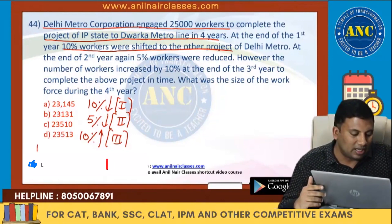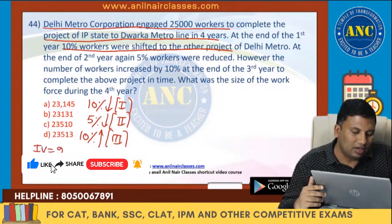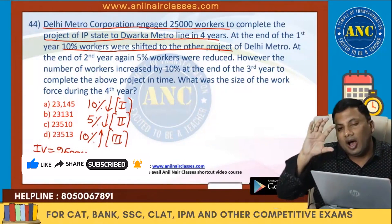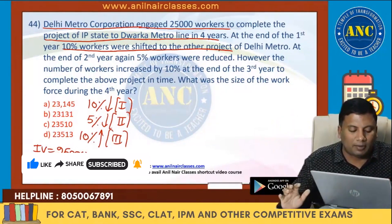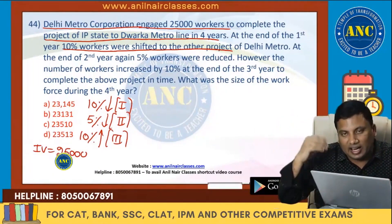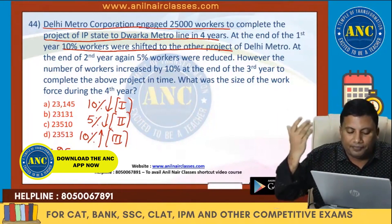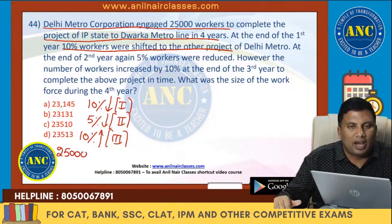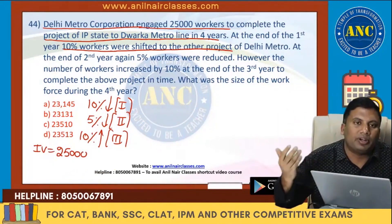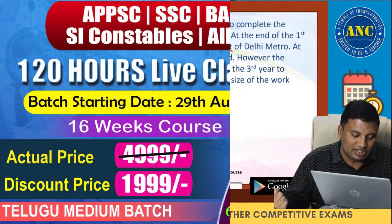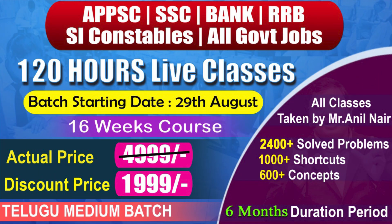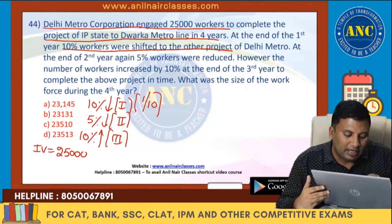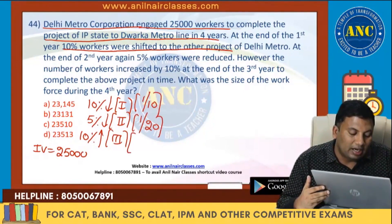What was the size of the workforce during the fourth year? Initial value: 25,000 workers. First year: out of 10, one person moved to another project (10% decrease). Second year: out of 100, five people were fired (5% decrease). Third year: 10% increase. So 10% is 1/10, 5% decrease is 1/20, and 10% increase is 1/10.